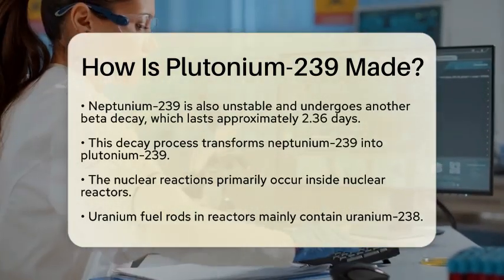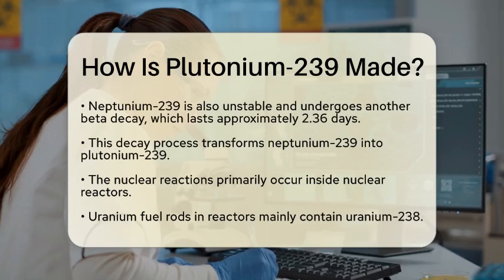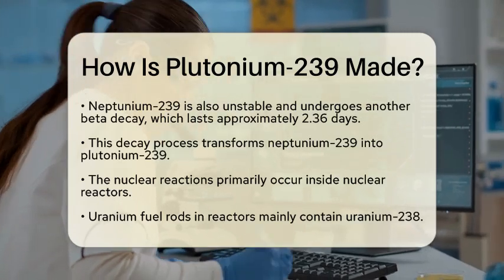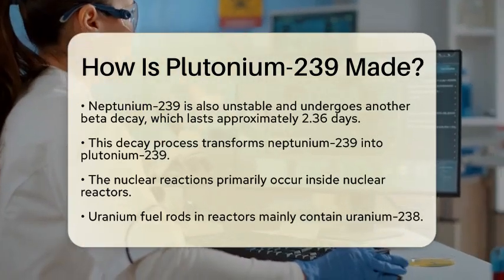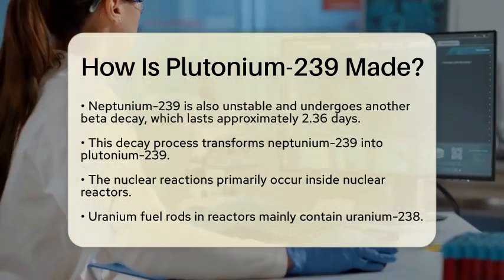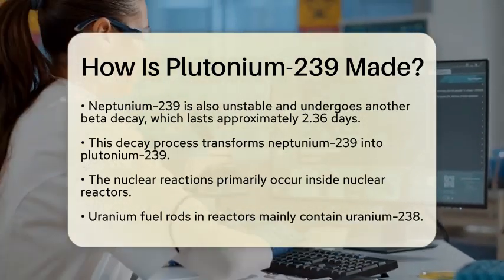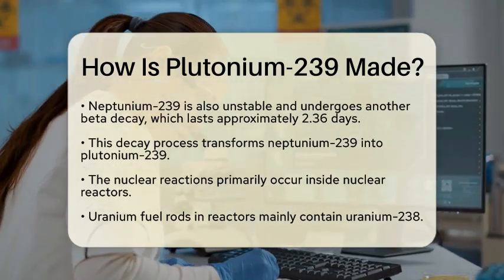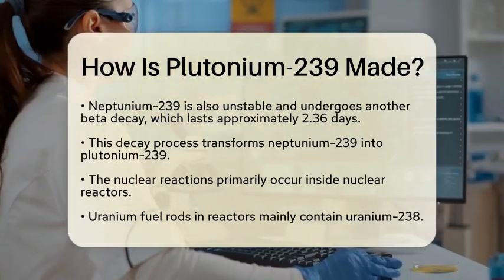Next, Neptunium-239 is also unstable. It undergoes another beta decay, which takes around 2.36 days. This decay converts Neptunium-239 into Plutonium-239, completing the transformation.